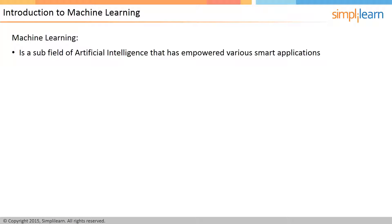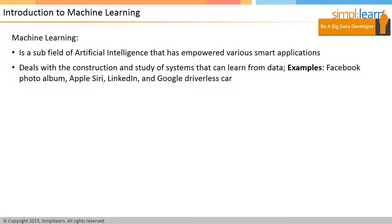Let's first understand what machine learning is. It's a subfield of artificial intelligence that has empowered various smart applications. It deals with the construction and study of systems that can learn from data. For instance, consider the photo album feature of Facebook. This feature has the capability to learn from the data and hence recognize the faces that can be tagged in a picture.